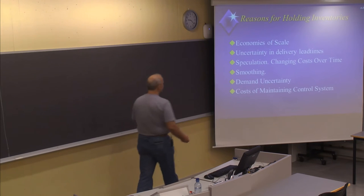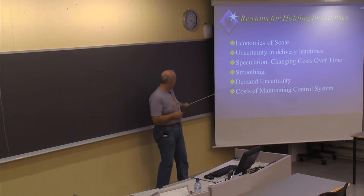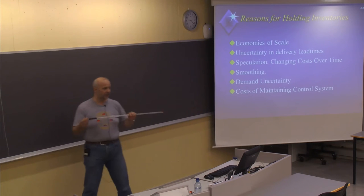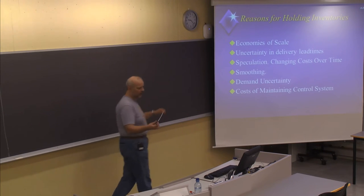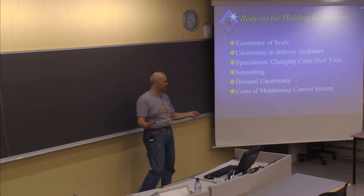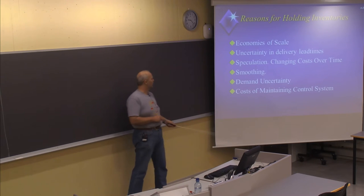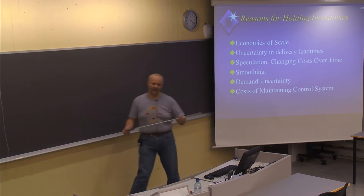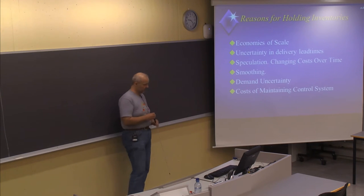Another reason is uncertainty — uncertainty in delivery lead time and also uncertainty in demand. Delivery lead time is the time from when you place an order to when you receive the delivery of the goods. This might be a fixed time, for example exactly three days, or it could be uncertain. If the lead time is uncertain, you need to hold inventory to prevent a stock-out, because you don't know exactly when you will receive the new order.